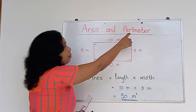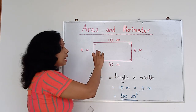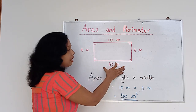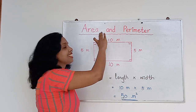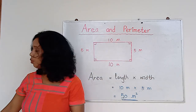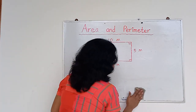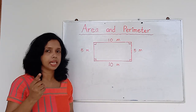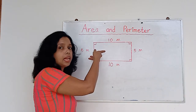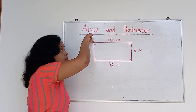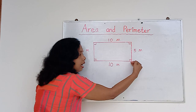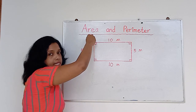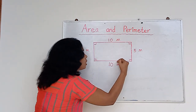Now let's go to the other term: perimeter. I will apply this to the same shape. Let's talk about the same land — 10 meters length, and this side also 10 meters, and here 5 meters and 5 meters. Now I want to calculate the perimeter. Can you remember the fence example? I want to have a fence around my land. So let's say I am going to start from here and cover this side, then this side, then this side, then this side, until I come back to the point where I started. That means the total distance I am going to travel.